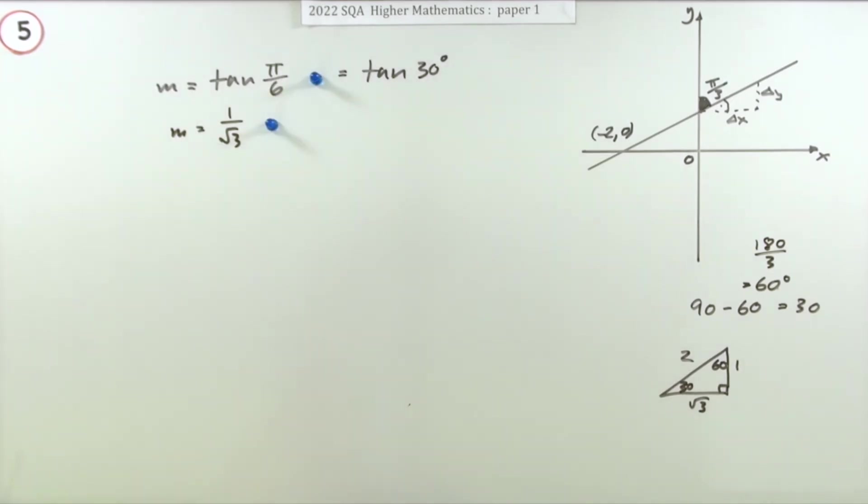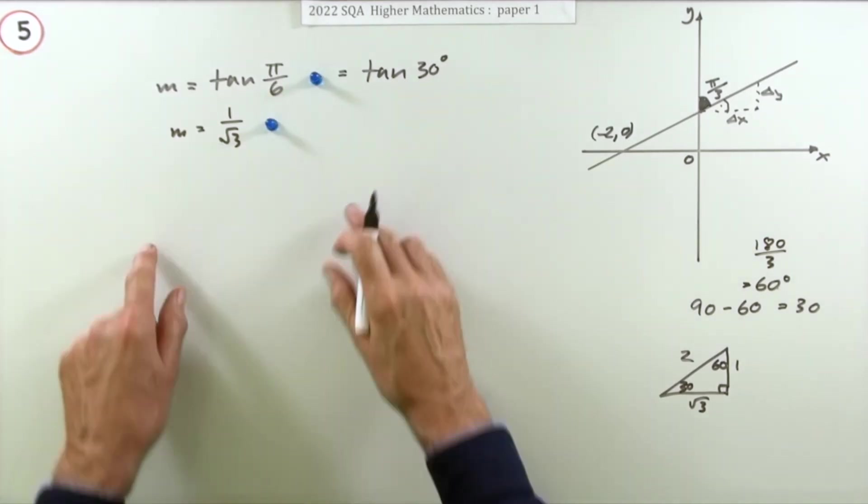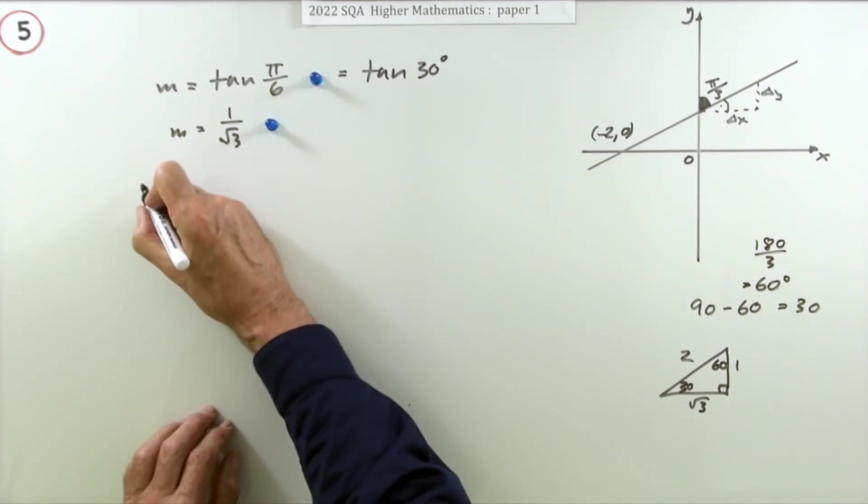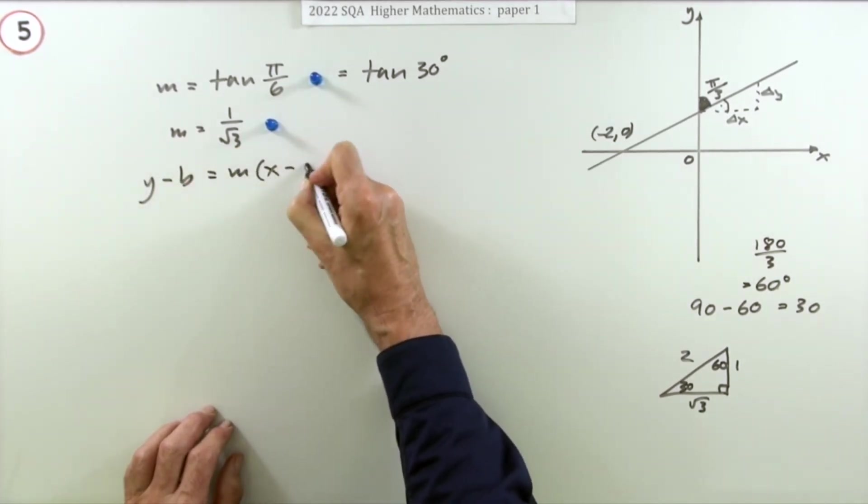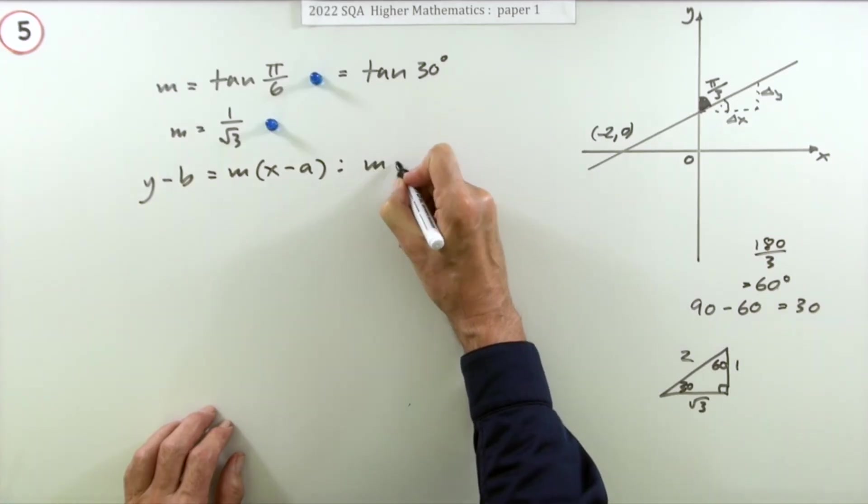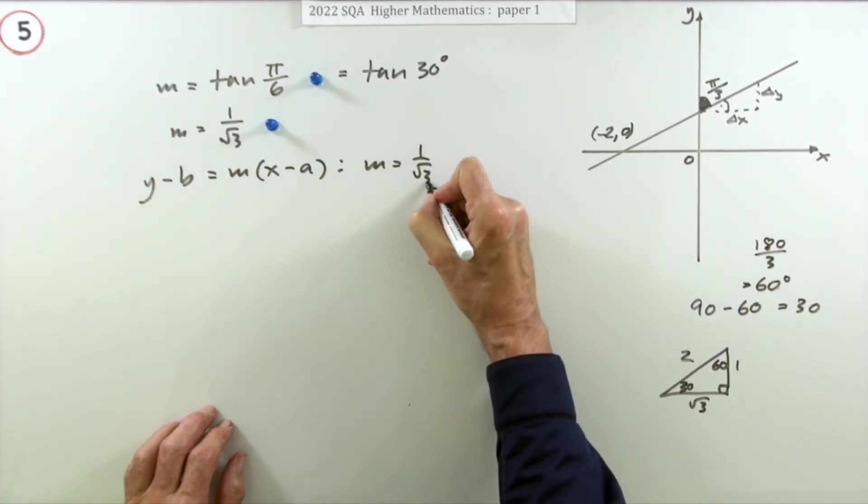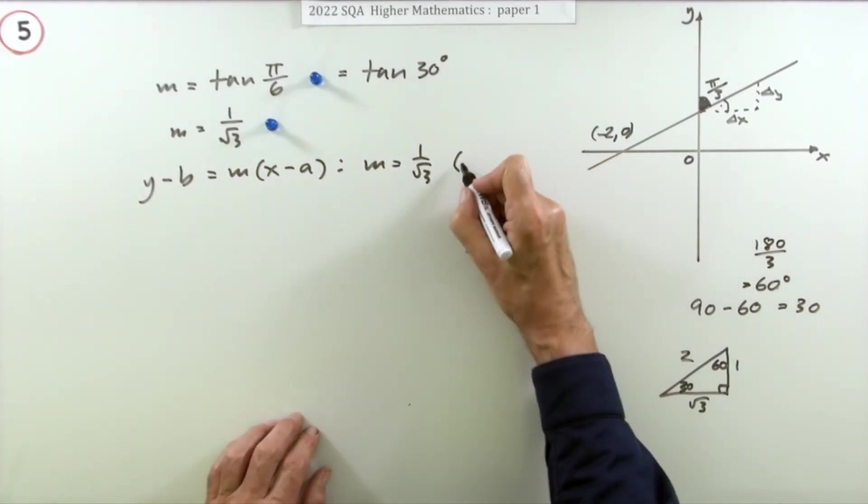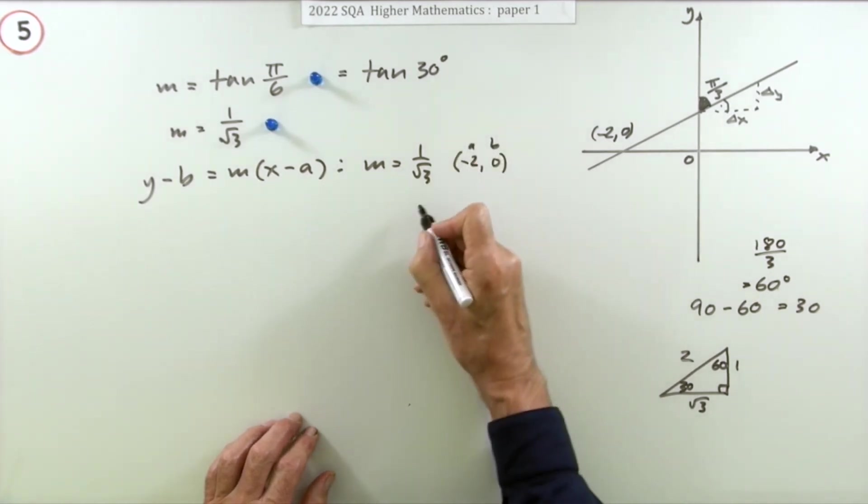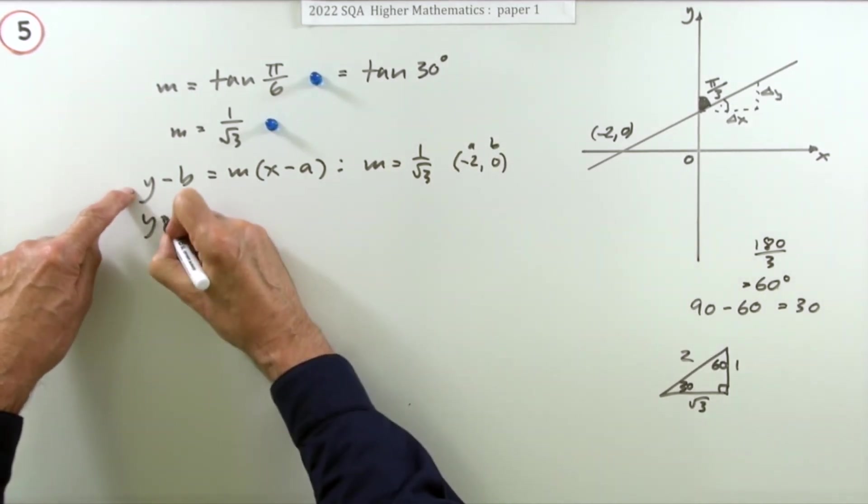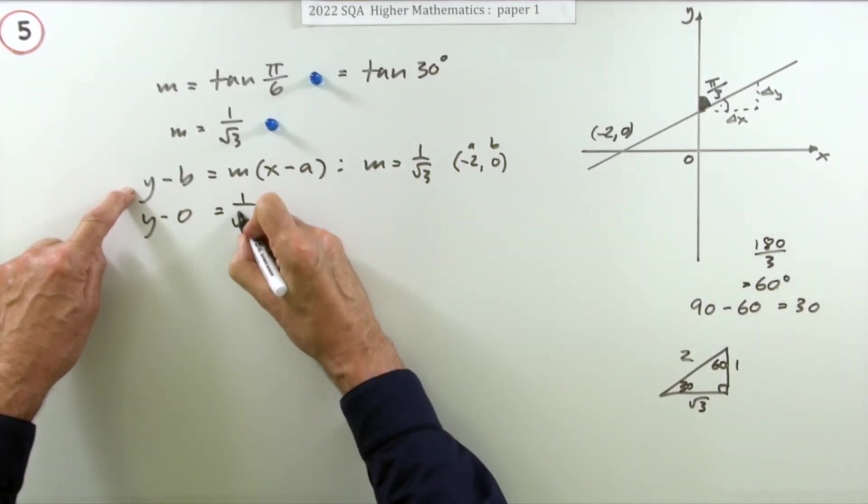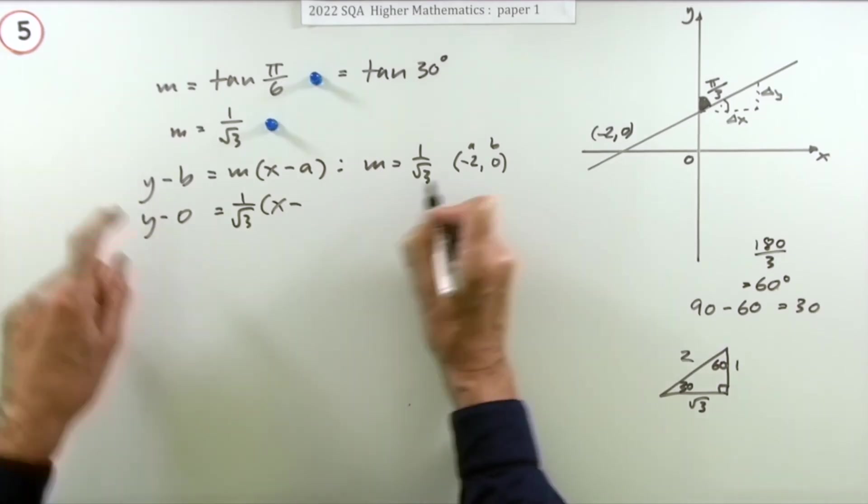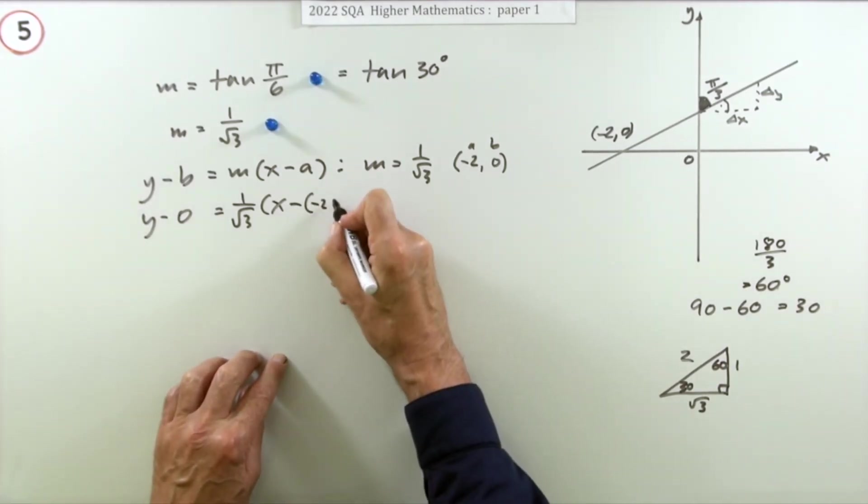Doing that gets a mark. Now you've just got to feed it in. So using whichever form you like, y minus b is m(x minus a), using m equals 1/√3 and the point being (-2, 0). That's a and b, so you've got y minus the y coordinate is m, 1/√3, times x minus the x coordinate, that's negative two.